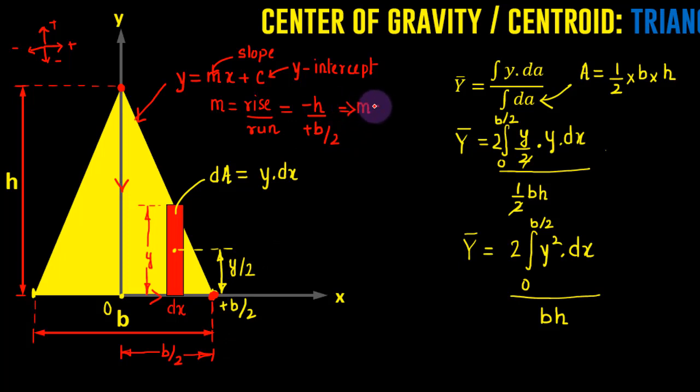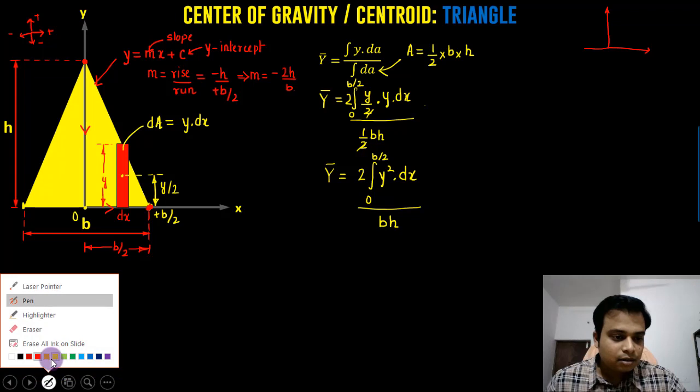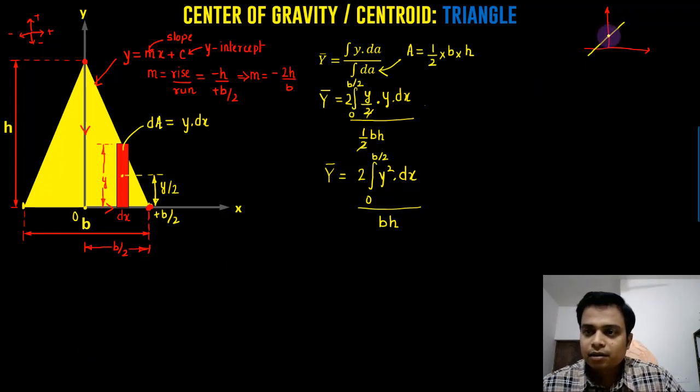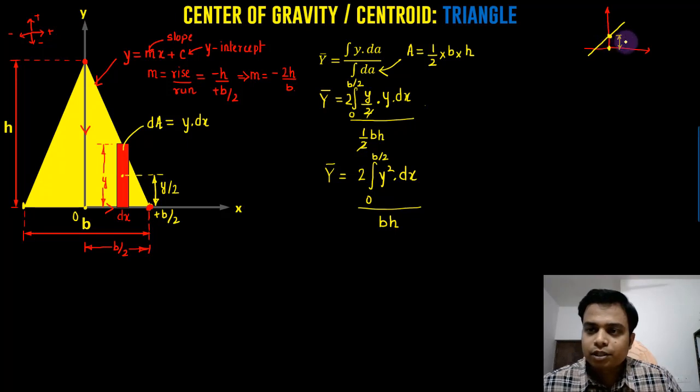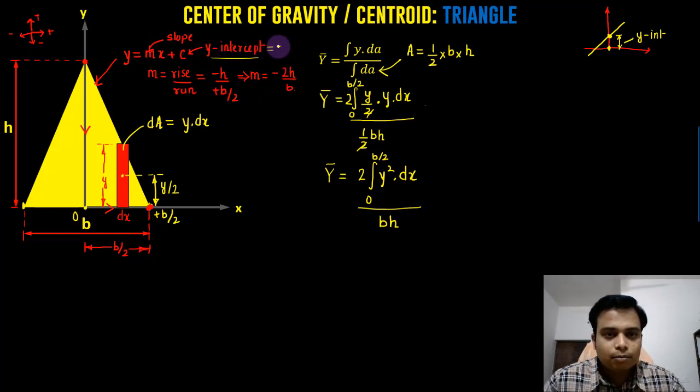Now, guys, if you watch carefully, the y-intercept, if I can just make a small diagram over here. There is a line like this. This is the point where the line cuts the y-axis. And the distance of this point from the origin is what you refer to as the y-intercept. So the y-intercept of this line is nothing but h. So y-intercept, this c, is nothing but positive value of h. So we can essentially frame this equation in a better way. y equals what minus 2h over b times of x plus h.